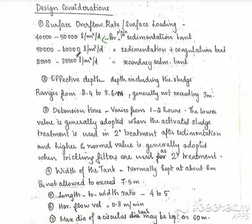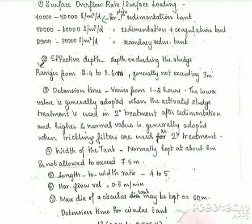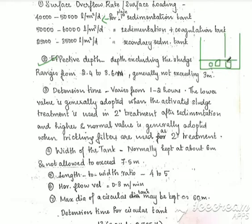Per day. In this situation, the surface overflow rate — we are designing the sedimentation tank around the surface overflow rate. This makes the sedimentation tank easy to design. The effective depth of the sedimentation tank at the bottom portion of the sludge is 3.4 to 3.6 meters. With mechanical cleaning equipment, the depth of the sludge portion is 2.4 to 3.6 meters. The detention time is the third design point.